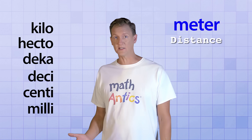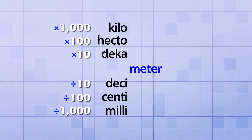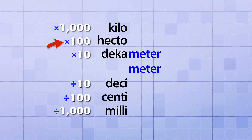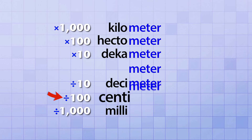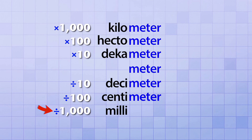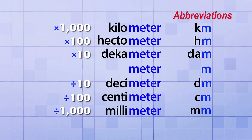A meter is a basic unit of distance and it happens to be about this long. As you can see from our prefixes, the unit that's 10 times bigger than a meter is called a decameter, the unit that's 100 times bigger than a meter is called a hectometer, and the unit that's 1,000 times bigger than a meter is called a kilometer. This system also has prefixes to define units that are smaller than a meter. The unit that's 10 times smaller, or 1 tenth of a meter, is called a decimeter. The unit that's 100 times smaller, or 1 hundredth of a meter, is called a centimeter. And the unit that's 1,000 times smaller, or 1 thousandth of a meter, is called a millimeter. There are also abbreviations for each of these units. A meter is abbreviated as M, and then you put other letters in front for the other units. For example, a kilometer is abbreviated KM, while a centimeter is abbreviated CM.